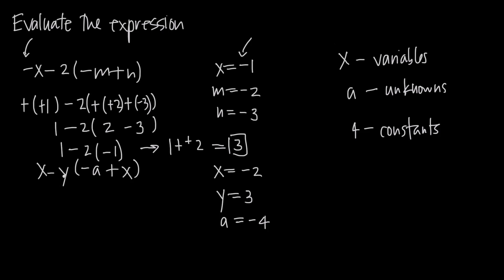Now let's look at this example where we have x minus y times the quantity negative a plus x. We know that x is negative 2, y is 3, and a is negative 4. So we're just going to be plugging in these values again. Plugging in negative 2 for x out in front, we get negative 2. Then we have minus y, which is 3, times the quantity negative a plus x. We have a is negative 4, but we also have this negative sign, so we'll say a negative negative 4. And then plus x — x is negative 2 — so we'll say plus negative 2.